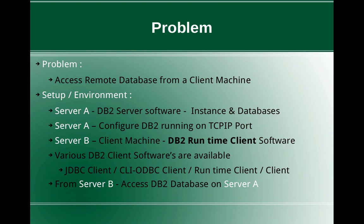Before getting into the solution, let me describe the setup and environment. We have Server A, which is going to be the DB2 server — this machine has DB2 server software installed, and instance and databases are all configured and created here. In Server A we have to configure DB2 so that it is running on a specific TCP/IP port, because the client will be using the TCP/IP port for communication. So you have to enable the TCP/IP communication manager on Server A.